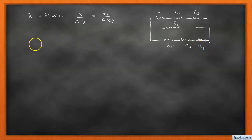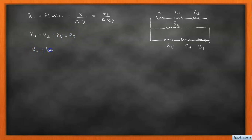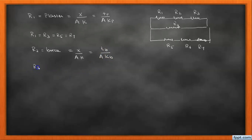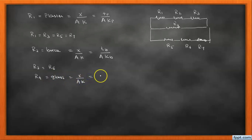The thickness and thermal conductivity of every plaster layer are equal, so R1 = R3 = R5 = R7. The resistance R2 due to the brick wall is: tb/(A·kb), and R2 = R6. The resistance R4 due to the glass layer is: tg/(A·kg).